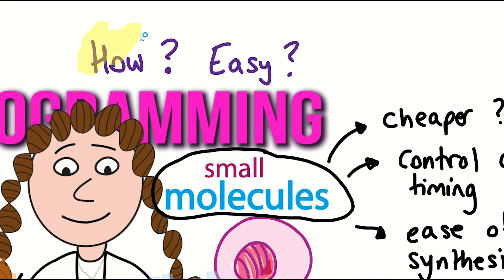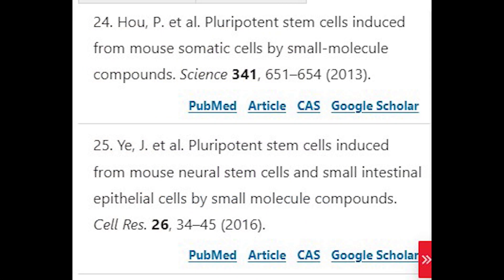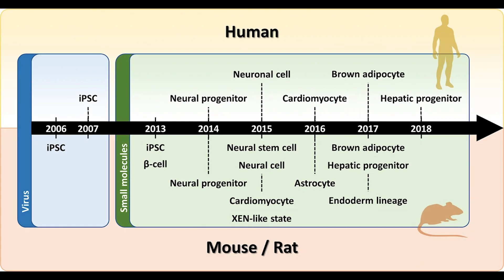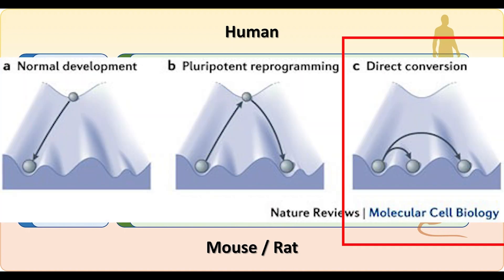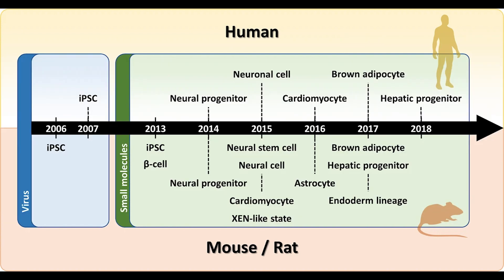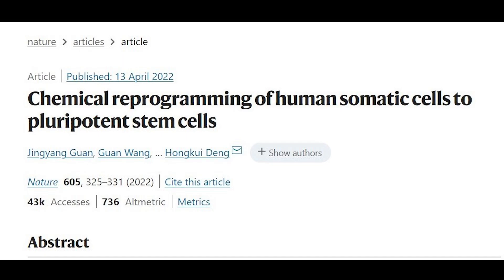Is it really possible? Well, yes, apparently. Publications from 2013 and 2016 showed pluripotent stem cells can be induced from differentiated cells using small molecules in mouse cells. Here is a timeline of small molecule reprogramming, which also showcases where small molecules have been used for direct conversion from one human cell type to another, skipping the pluripotent step. But this timeline is now out of date, because induced pluripotent stem cells have been made with small molecules in human cells, as demonstrated in this recent Nature paper.